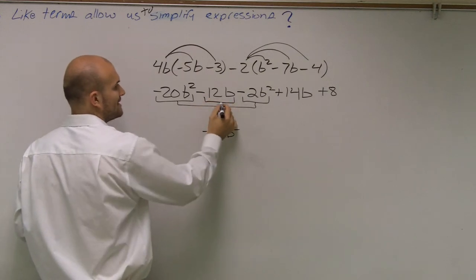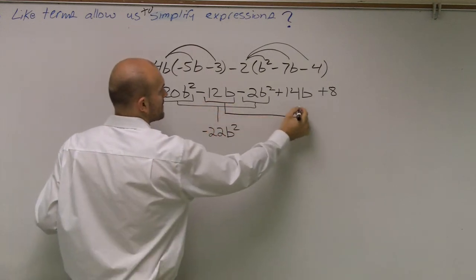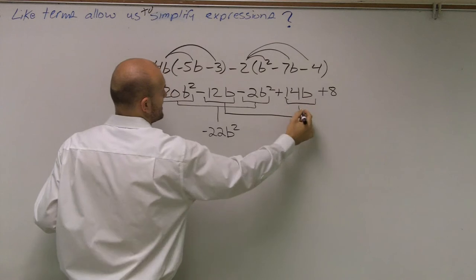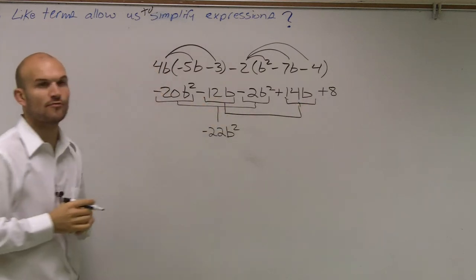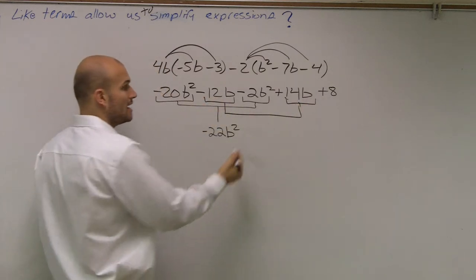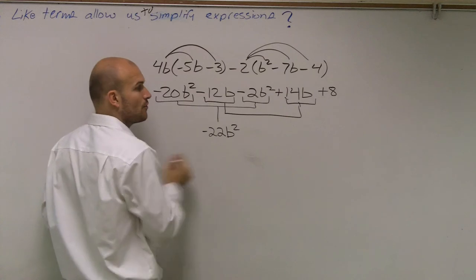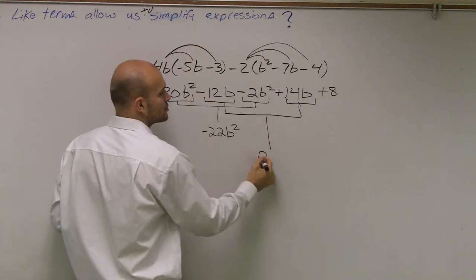Then, I look at this term, I have a negative 12 and a 14b, or I'm sorry, negative 12b and a 14b. I can combine them, so negative 12b plus 14b is going to give me 2b.